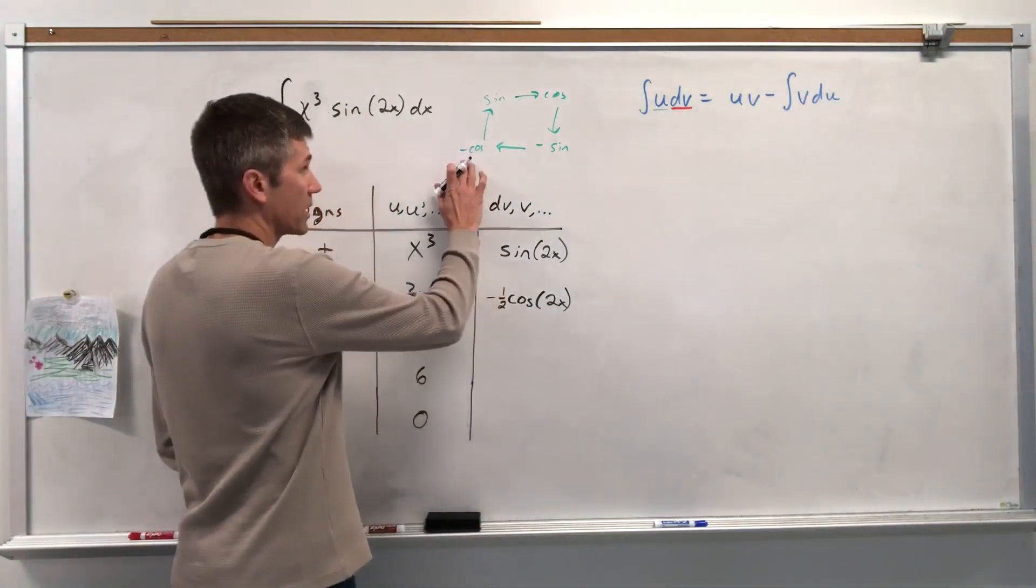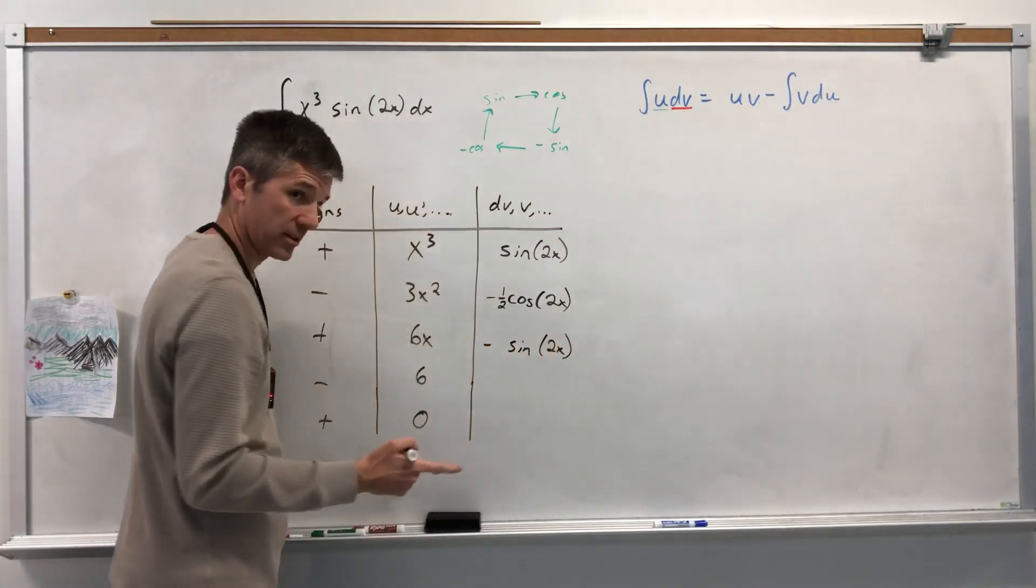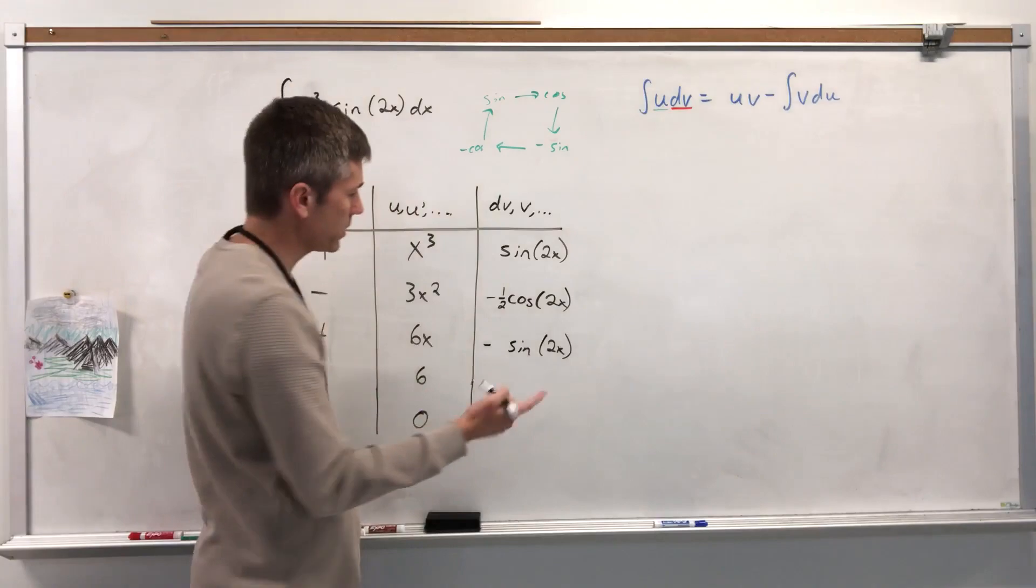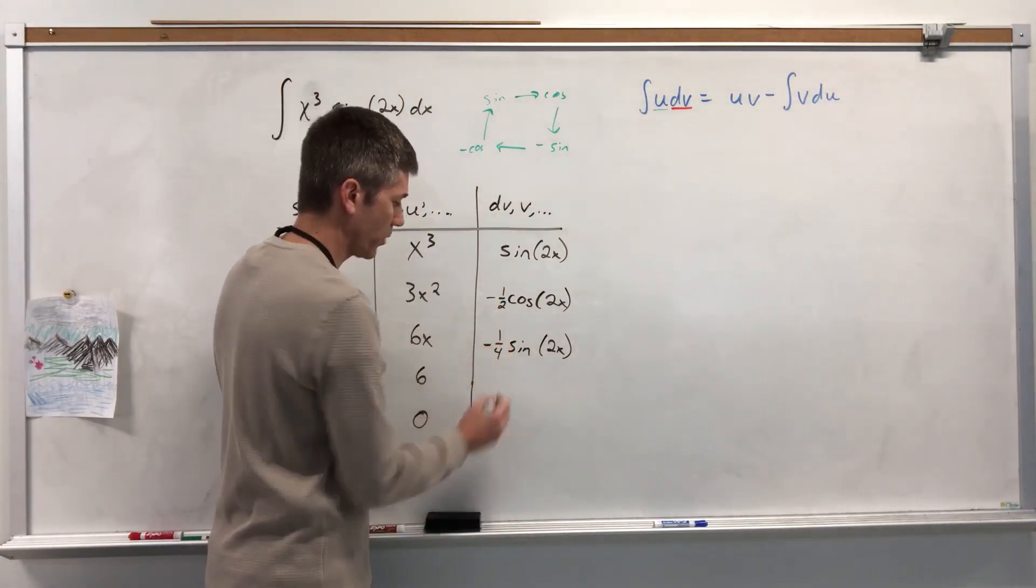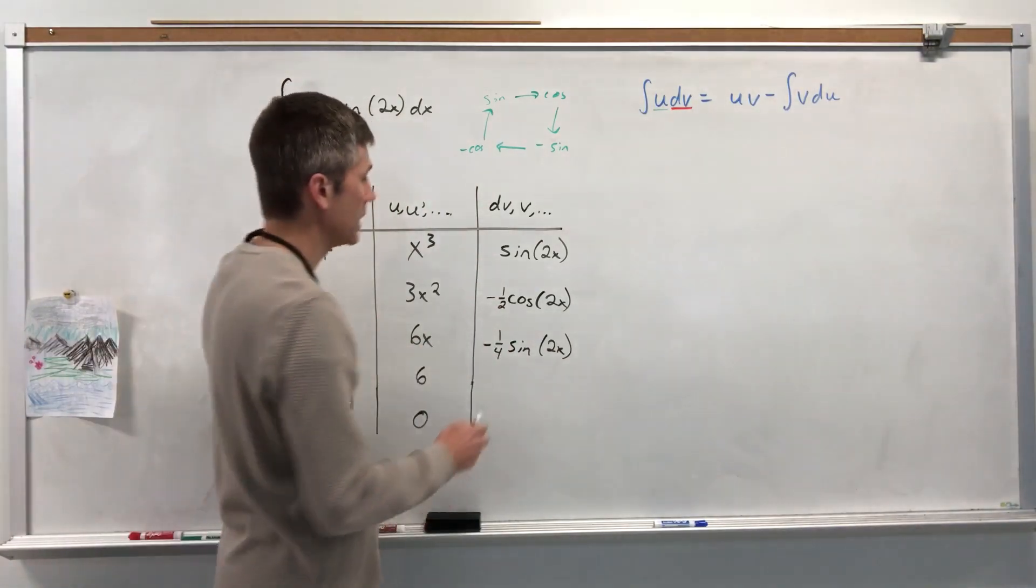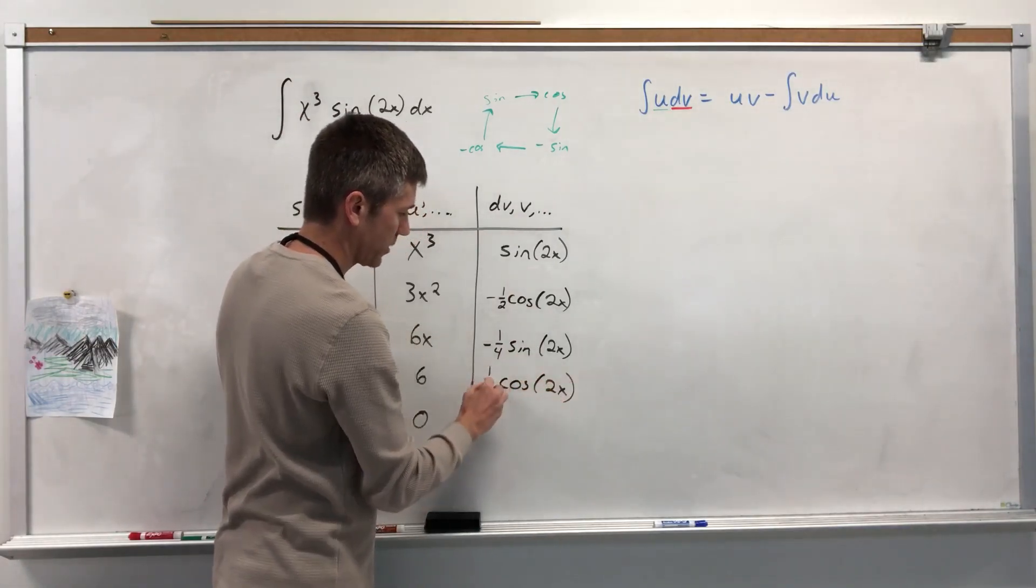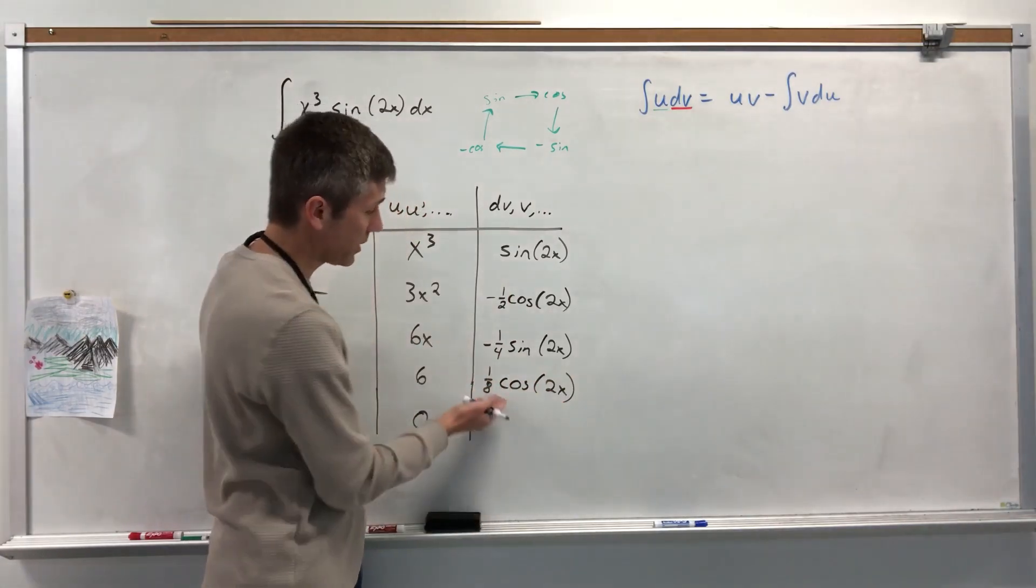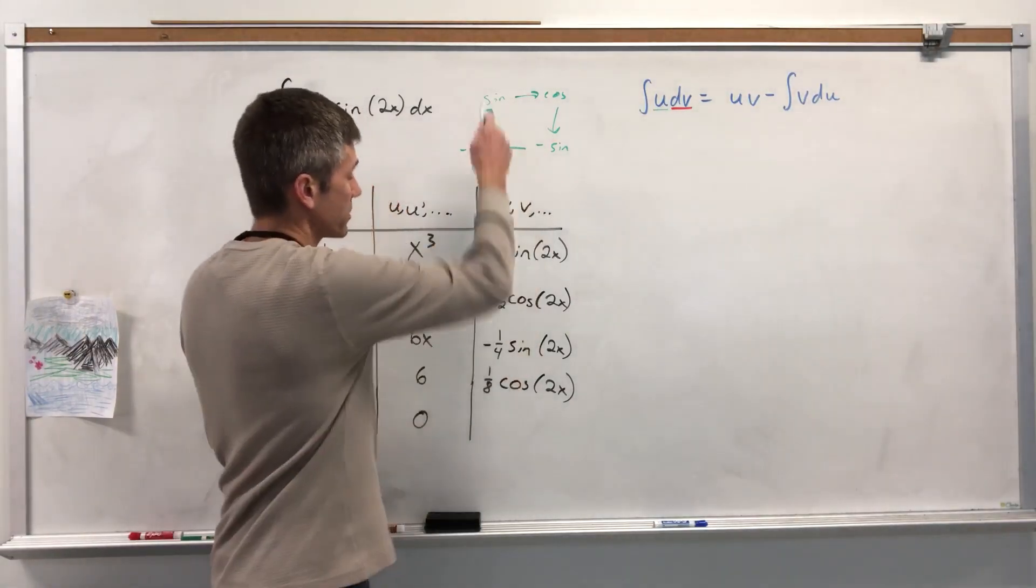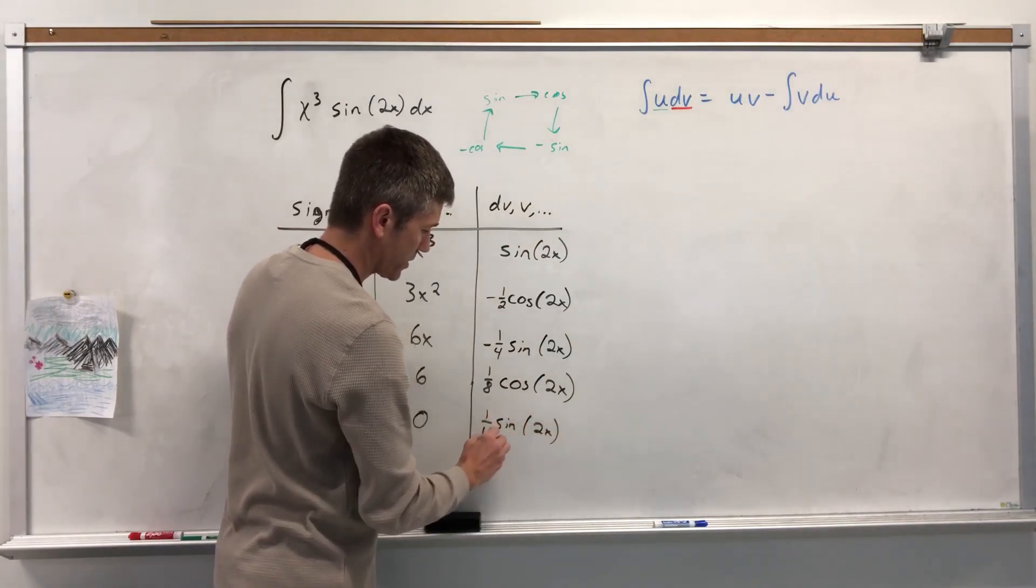So antiderivative of negative cosine would be negative sine 2x. But because of the chain rule, I would have to multiply by 2. Well, I don't want it to be a 2 there. I want it to be a 1 half. So this would be 1 fourth. I hope you notice the pattern. This is 1 over 1, that's 1 over 2, 1 over 4. The next one's going to be 1 over 8. Antiderivative of negative sine is positive cosine 2x, 1 over 8. Because if I took the derivative of this, I'd have to multiply by 2. 2 times 1 eighth would give me 1 fourth. And one more time. Antiderivative of cosine is sine. So sine 2x and 1 sixteenth.